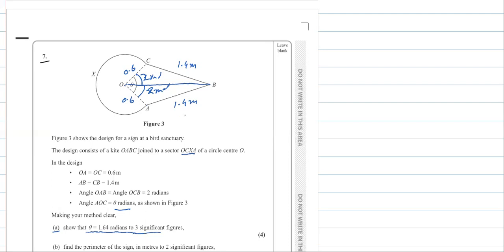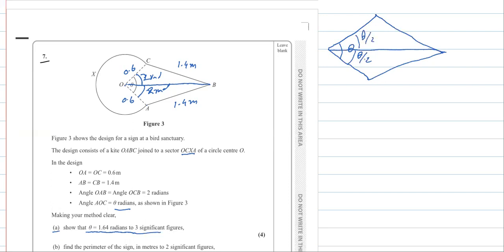If you consider this kite, the total angle is theta. As per the rule of a kite, this will be theta over 2 on each side. So we have triangle OAB with OA = 0.6 and AB = 1.4, with O, A, and B as the vertices.